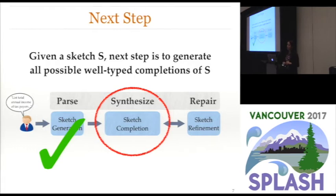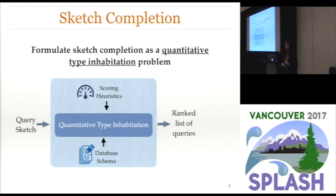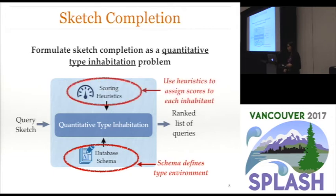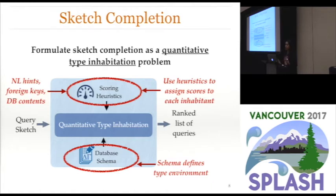Once we generate sketches using semantic parsing, the next step is to generate all possible well-typed completions of each sketch. We formulate the sketch completion problem in terms of quantitative type inhabitation, where the goal is to find all inhabitants of a type and associate a score with each one. The type environment corresponds to the database schema, and we use a set of domain-specific scoring heuristics to assign scores. These heuristics use database-specific clues like primary keys, foreign keys, contents of the database, and the similarity between natural language hints and the names of database elements.